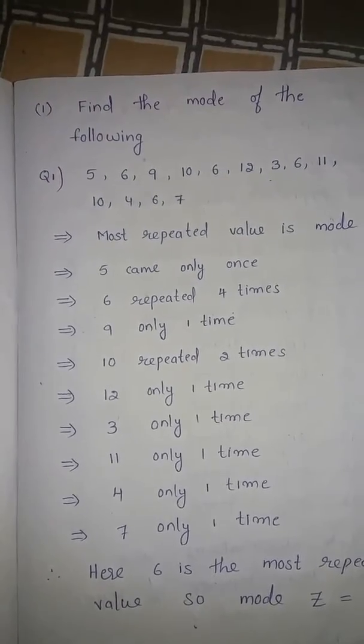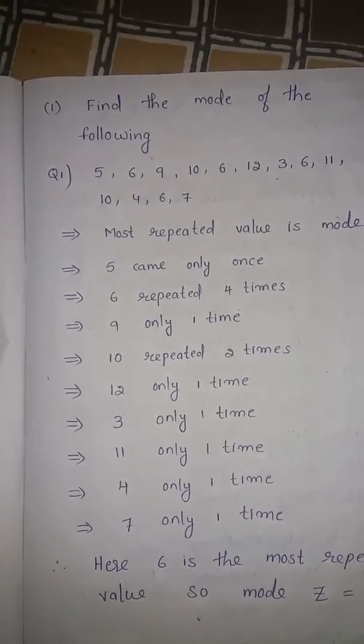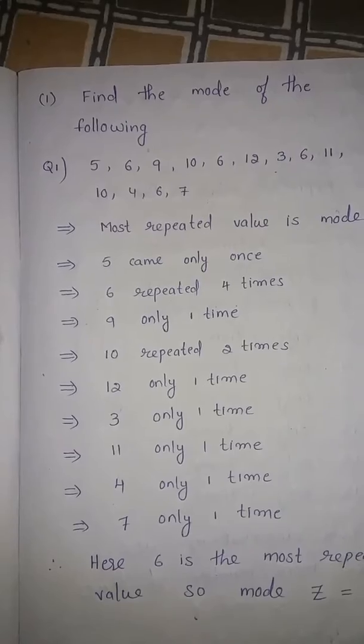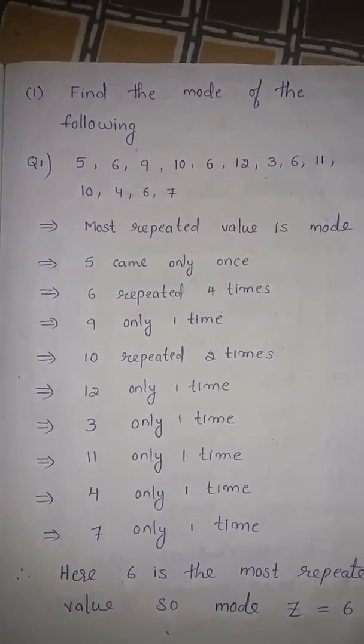Find the mode of the following: 5, 6, 9, 10, 6, 12, 3, 6, 11, 10, 4, 6, 7. We know that the most repeated value is the mode.